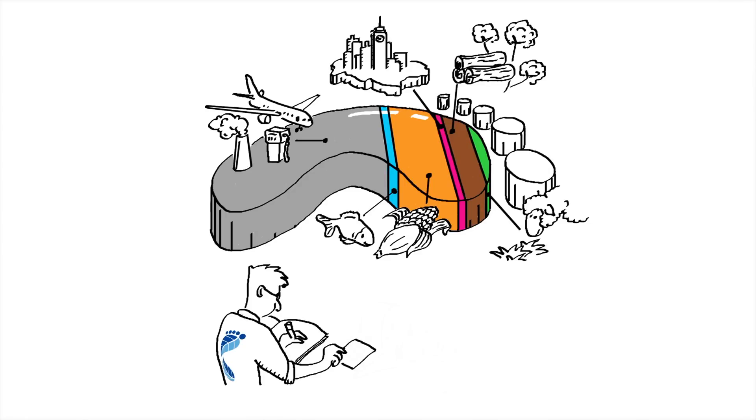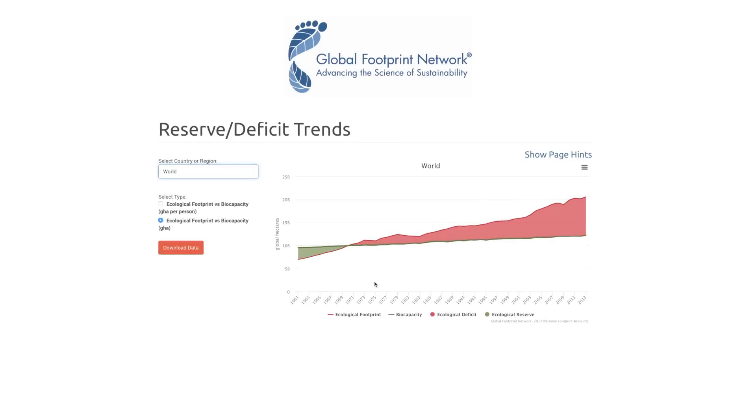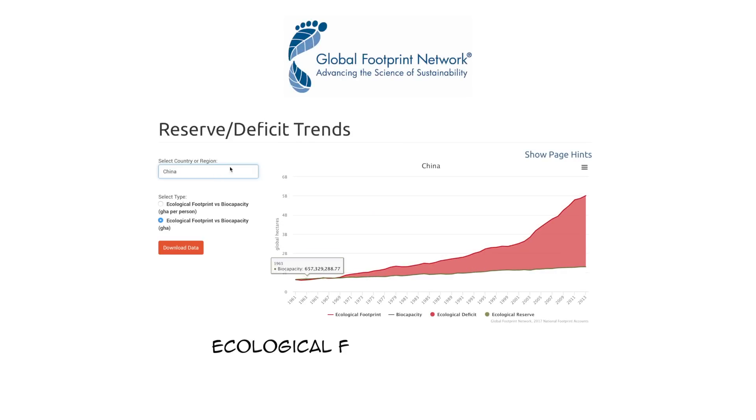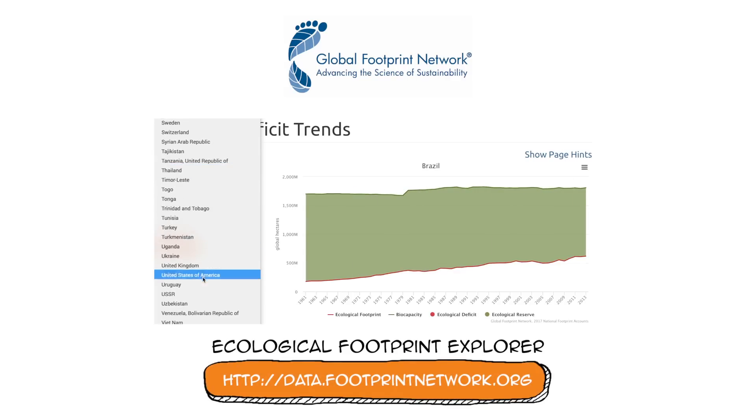Global Footprint Network calculates the footprint of more than 200 countries and regions from 1961 to the present. Find out if your country's ecological budget is in the red. Visit our Footprint Explorer open data platform at data.footprintnetwork.org.